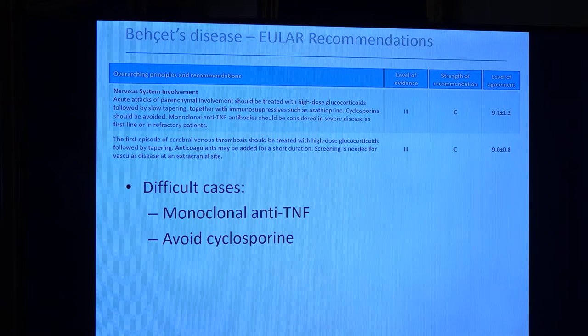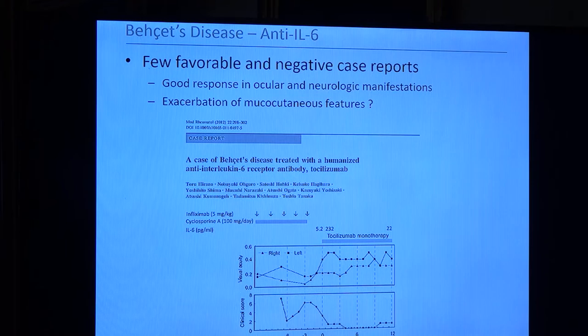For nervous system involvement, corticosteroids are the preferred choices; immunosuppressives can be used. For refractory cases, we can use anti-TNFs. One critical issue: you should avoid cyclosporine. Cyclosporine is a very effective treatment for uveitis, but it increases the risk of parenchymal neurologic disease. So when there is any suspicion about parenchymal neurologic disease, cyclosporine should be avoided. Anti-IL-6 can be tried for severe neurologic disease because of IL-6 involvement, but there is an issue — in those individuals taking anti-IL-6, the risk of skin lesions gets higher, as anti-IL-6 may exacerbate skin manifestations in some patients.